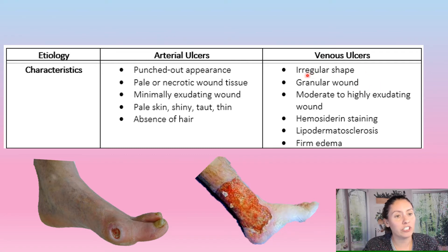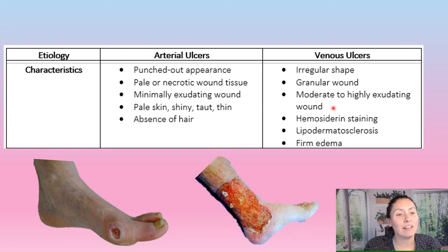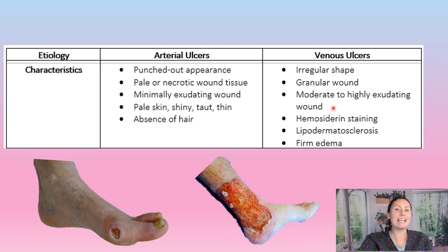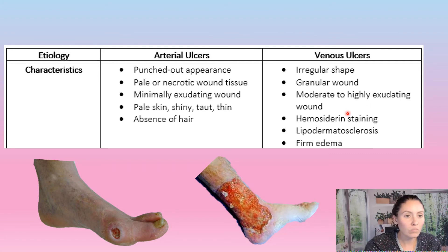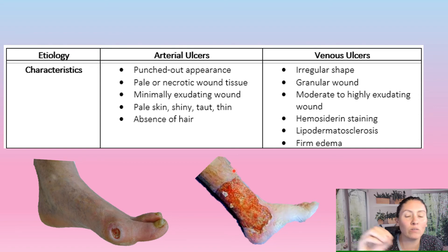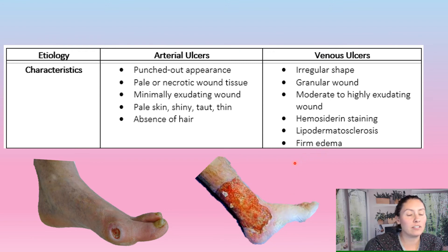Venous ulcers differ from arterial ulcers because they are very irregular in shape. It's a very red, granular wound with moderate to high amounts of exudate. This exudate is normally from edema — with venous disease, blood isn't flowing back to the heart properly, causing swelling, and the wound becomes an easy exit route for that fluid. We can also see hemosiderin staining, that brown stain on the skin, which comes with venous disease, along with firm edema.